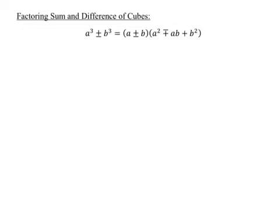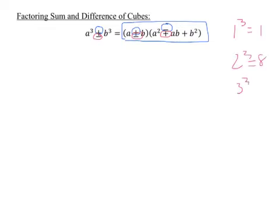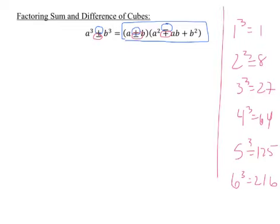The next topic is factoring the sum and difference of cubes, similar to difference of squares but more complex. For a³ plus or minus b³, the formula is (a ± b)(a² ∓ ab + b²) — use the top signs for sums and bottom signs for differences. It's important to know perfect cubes: 1³=1, 2³=8, 3³=27, 4³=64, 5³=125, 6³=216. You won't need to go much higher than that in this class.